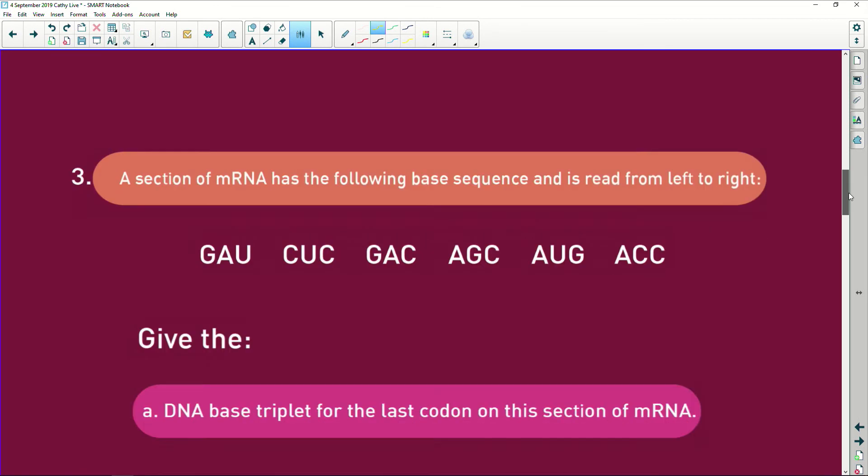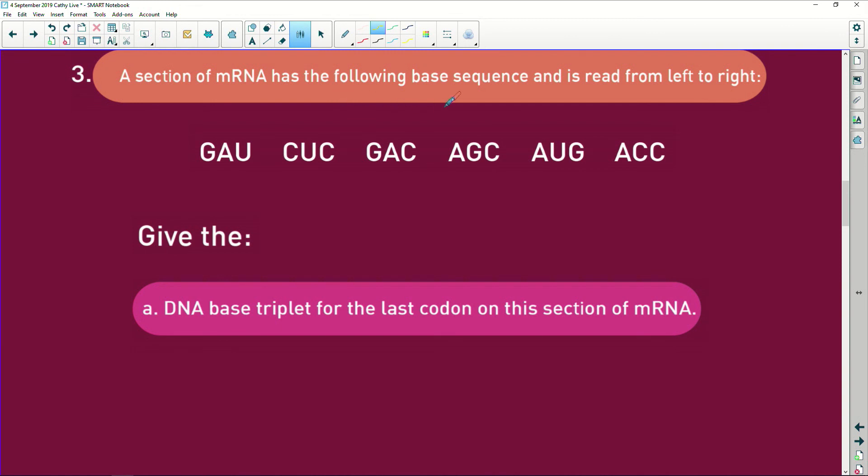A selection of messenger RNA has the following base sequences and is read from left to right. Give the DNA base triplet for the last codon, so it's for this one. Remember DNA and messenger RNA, the codon is going to be complementary to the DNA, so it's going to be TGG. It's as simple as that.